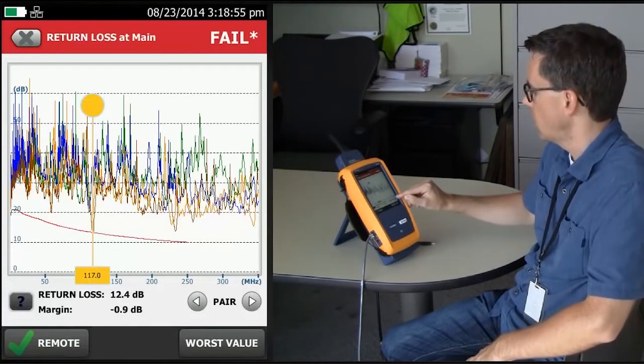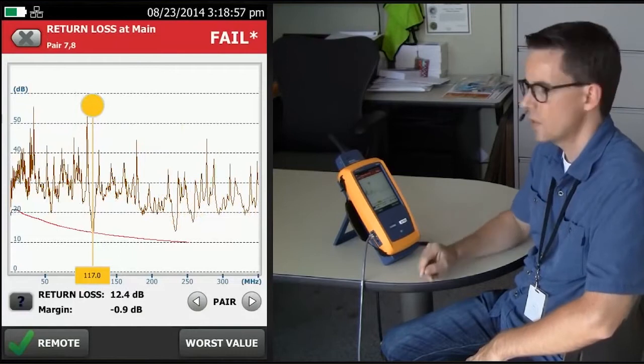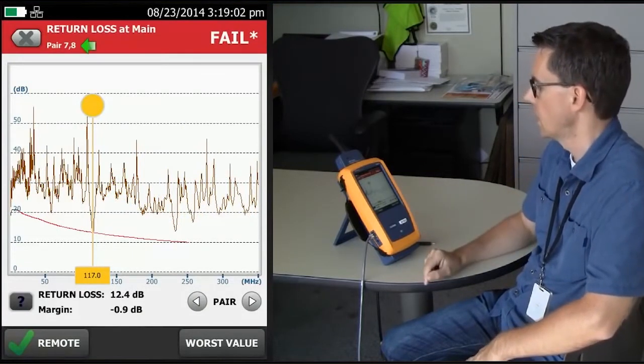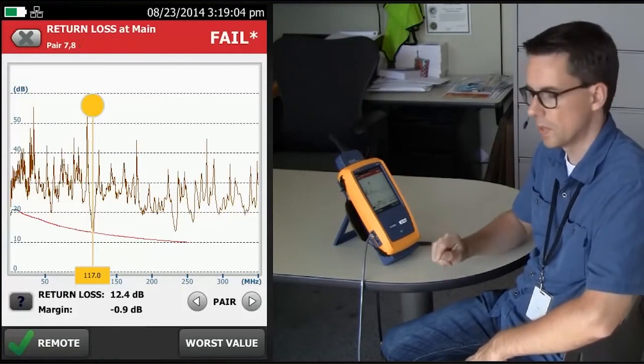If we tap next to pair, the tester is going to automatically go to the worst performing pair, pair 7-8, and that's important to remember in a moment.